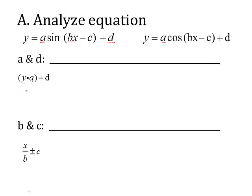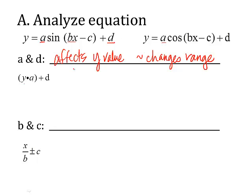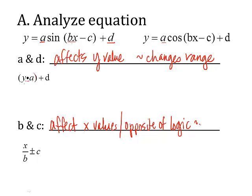A and d: a will be multiplied by your y and then you add whatever d is. So a is going to affect your y value, which will in essence change your range. When you write your formula for each equation, you're going to do y times whatever a is in parentheses, because you do that first, then add or subtract whatever d is. The b and c coefficients are going to affect your x values — and remember, it's always the opposite of logic. It's going to shift your graph left and right.